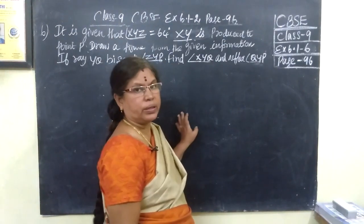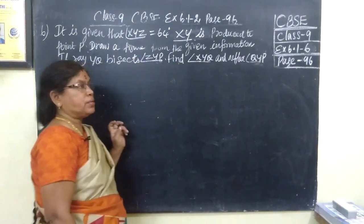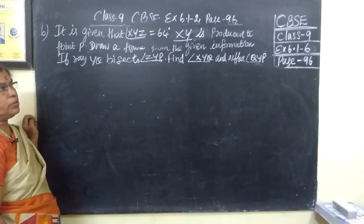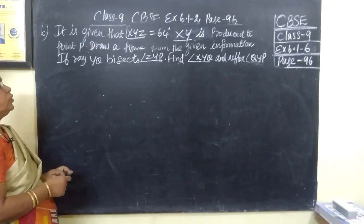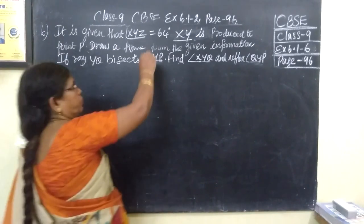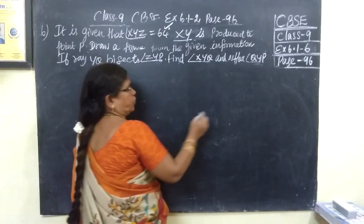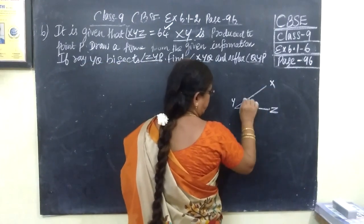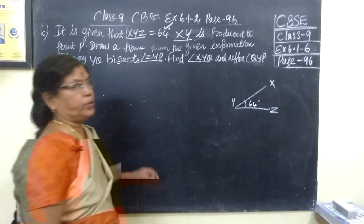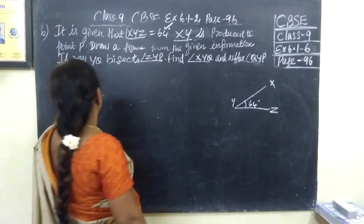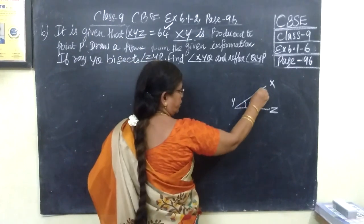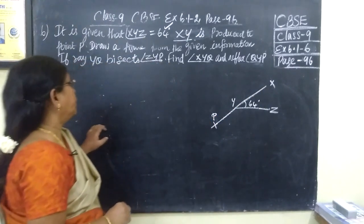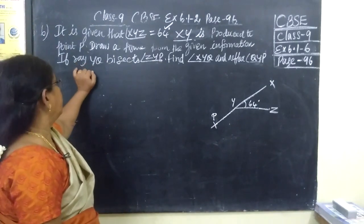Hello students. CBSE Ex 6.1 question number 6. It is given that angle XYZ equal to 64°. XY is produced to the point P. Here XYZ equal to 64°, so draw XYZ this is 64°. Then XYZ is produced to the point P. You produce XYZ and mark the point as P. Draw a figure from the given information.